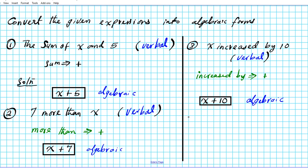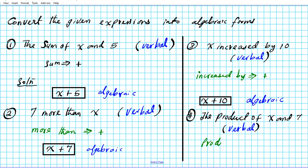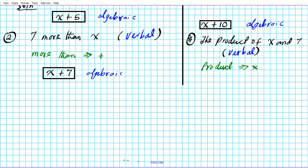Question four: the product of x and seven. This is the verbal form. The word 'product' simply means you multiply. Using the dot multiplication symbol, the product of x and seven can be written as x · 7, or in simplified form, 7x.